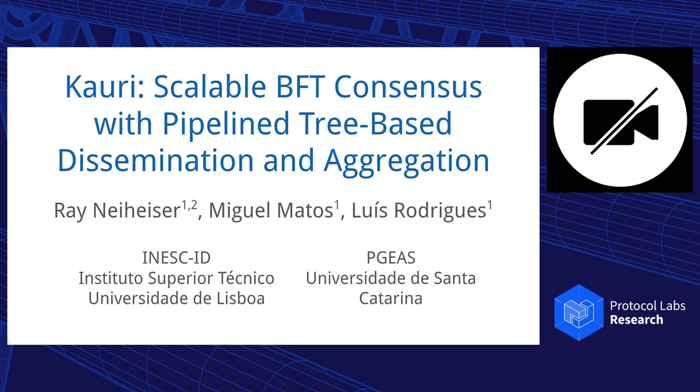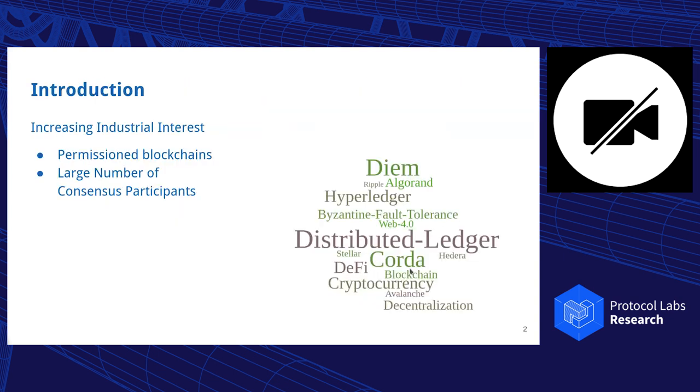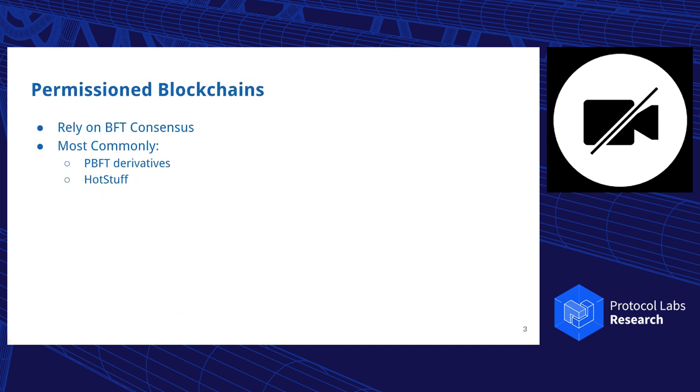This was one of these SOSP papers. As in many of the talks today, there is a lot of interest for permissioned blockchains, and there is also a decent interest for a large number of consensus participants. There's a relatively famous example, Algorand, that states in their white paper, or also Corda. Now, most of these systems rely on BFT consensus, and most commonly on some kind of PBFT derivative or HotStuff.